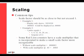Second, some Red Lion counters have a scale multiplier that is incorporated to make a small scale factor more recognizable. In our example, our scale factor without any multiplier is 0.000083. With a scale multiplier of 0.01 added, our scale factor now becomes 0.0083.